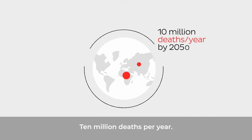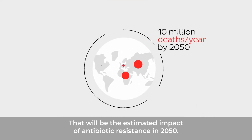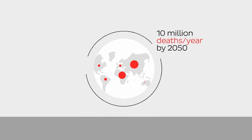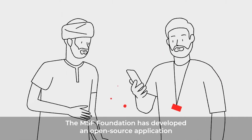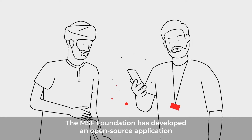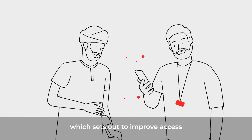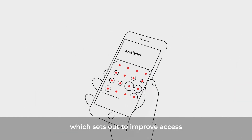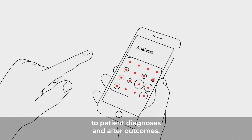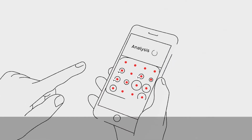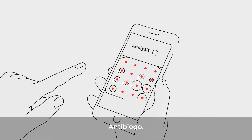10 million deaths per year — that will be the estimated impact of antibiotic resistance in 2050. To try to combat this, the MSF Foundation has developed an open-source application which sets out to improve access to patient diagnoses and alter outcomes. The name of this free app? AntibioGo.